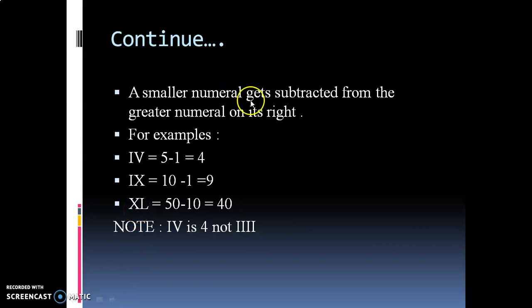A smaller numeral gets subtracted from the greater numeral on its right. For examples: IV = 5-1 = 4. IX = 10-1 = 9. XL = 50-10 = 40. Note: IV is 4, not IIII.